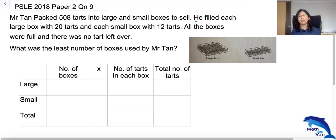A very common mistake that a lot of students will jump to conclusion is that since I want the least number of boxes, I will pack them into as many tarts into the large boxes. They will think that 500 tarts will go into 20.